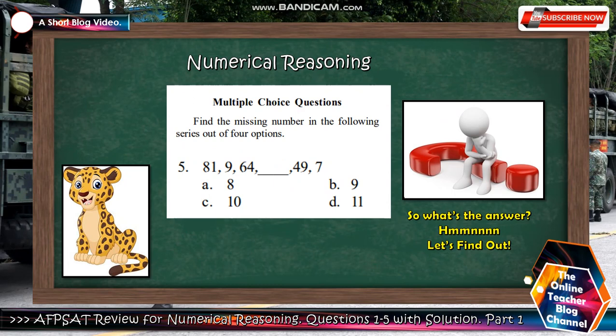Now let's proceed to last number 5: 81, blank, 9, 64, 49, and 7. Letter A is 8, B is 9, C is 10, and D is 11. So what's the answer? Let's find out.